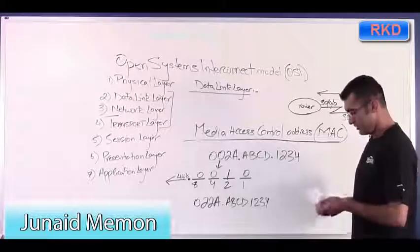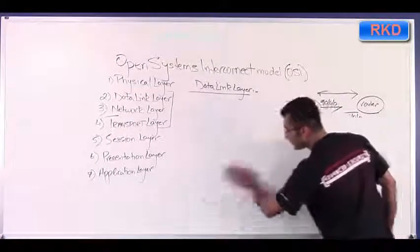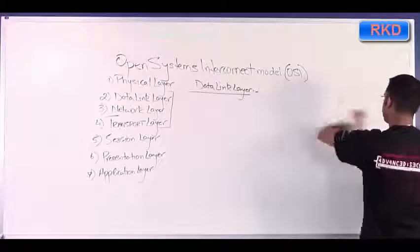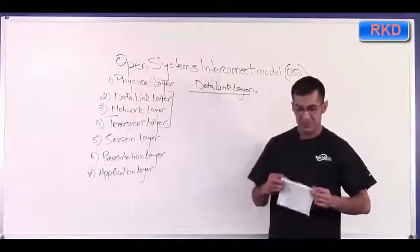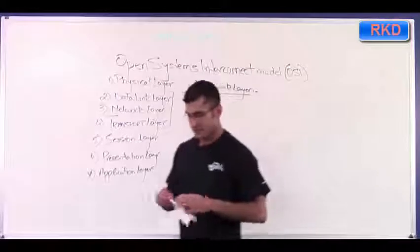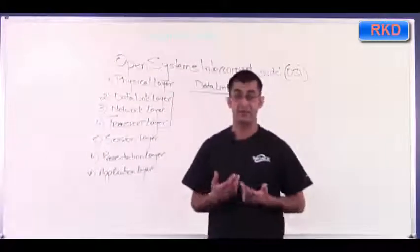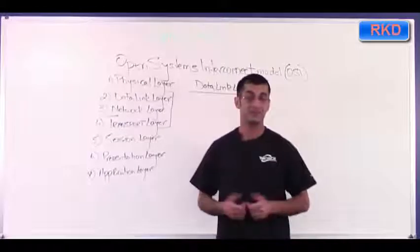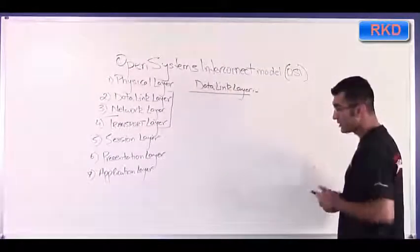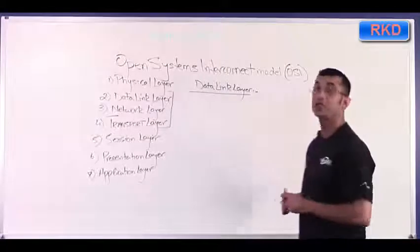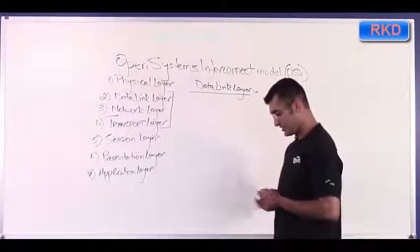Where do we use MAC addresses? Going back to the protocol data unit mentioned earlier, the protocol data unit is simply the way data is structured at Layer 2, the data link layer. The protocol data unit at Layer 2 is called a frame.